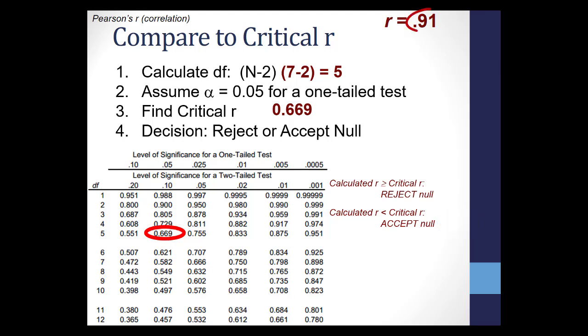In this case, 0.91 is greater than the 0.69 critical value, meaning we reject the null in favor of the alternative hypothesis. We would conclude, then, that the number of hours studying for an exam does positively correlate with scores on the exam.